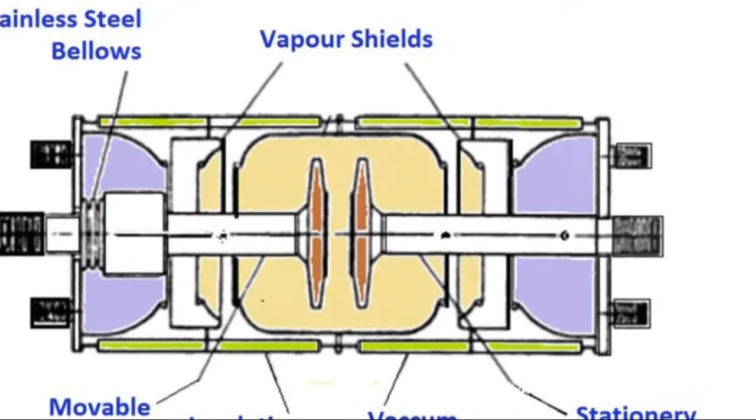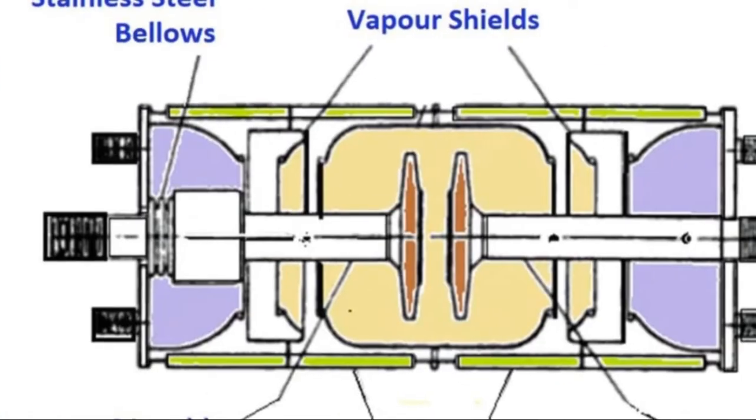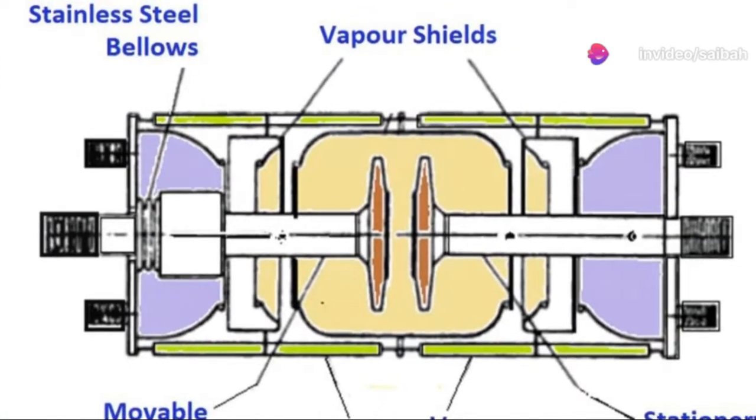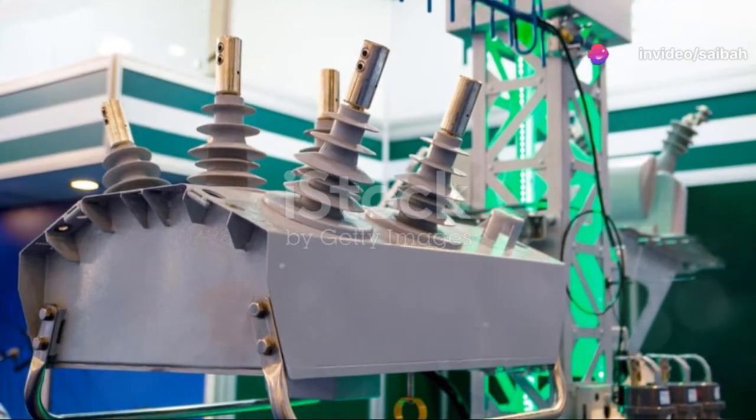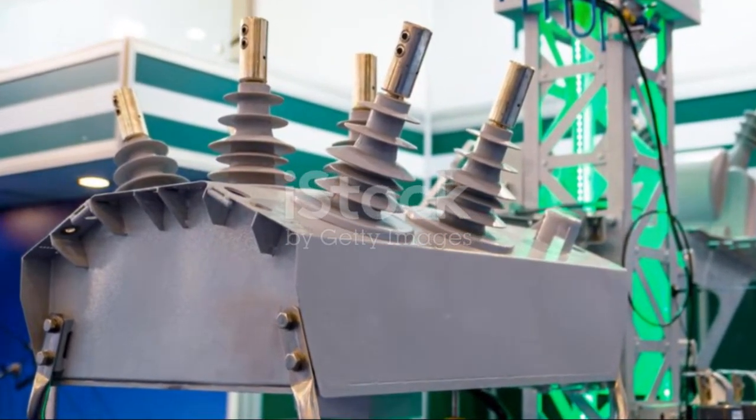On to construction. A VCB typically consists of three main parts: a fixed contact, a moving contact, and an arc shield within the vacuum chamber. These components are crucial for the breaker's operation, ensuring everything functions smoothly and safely.